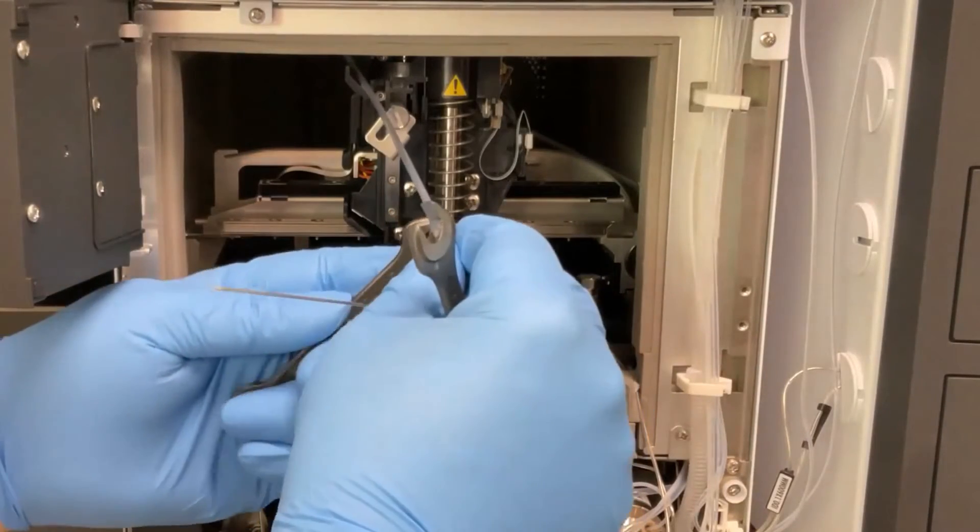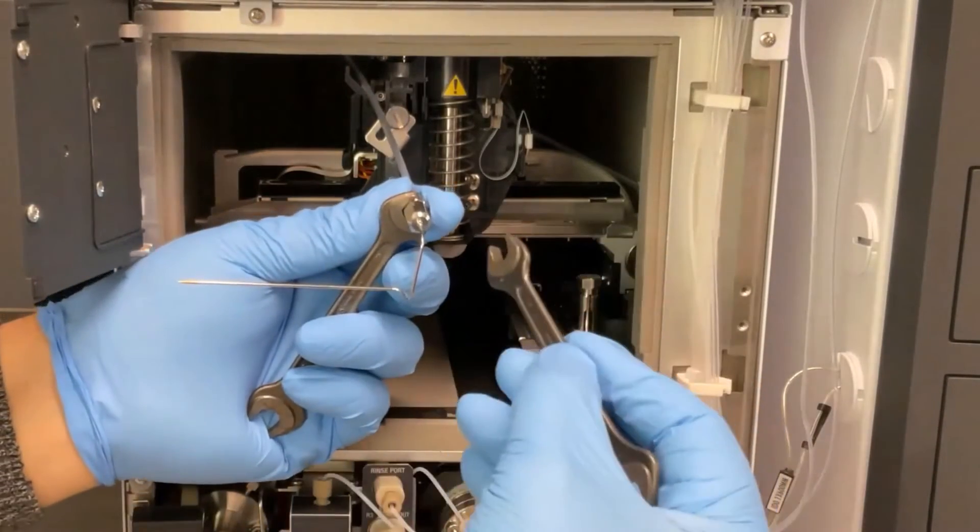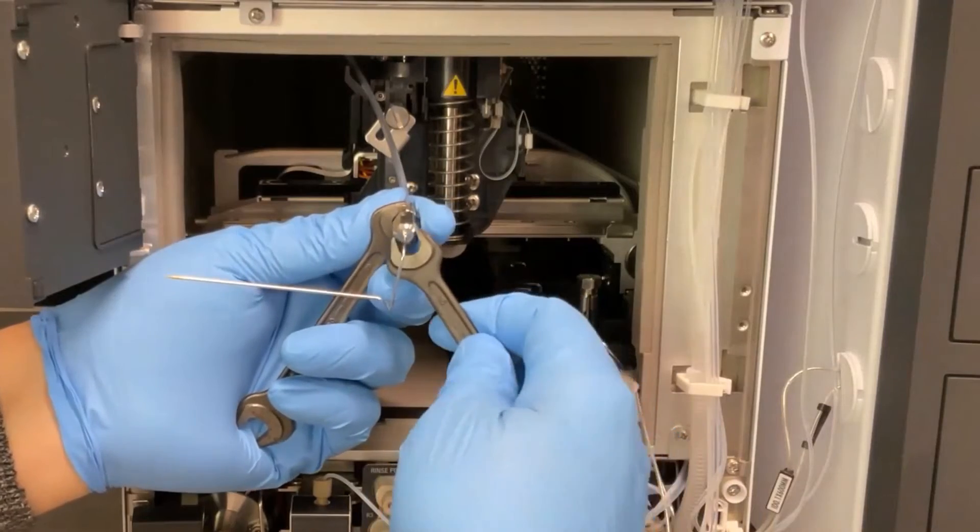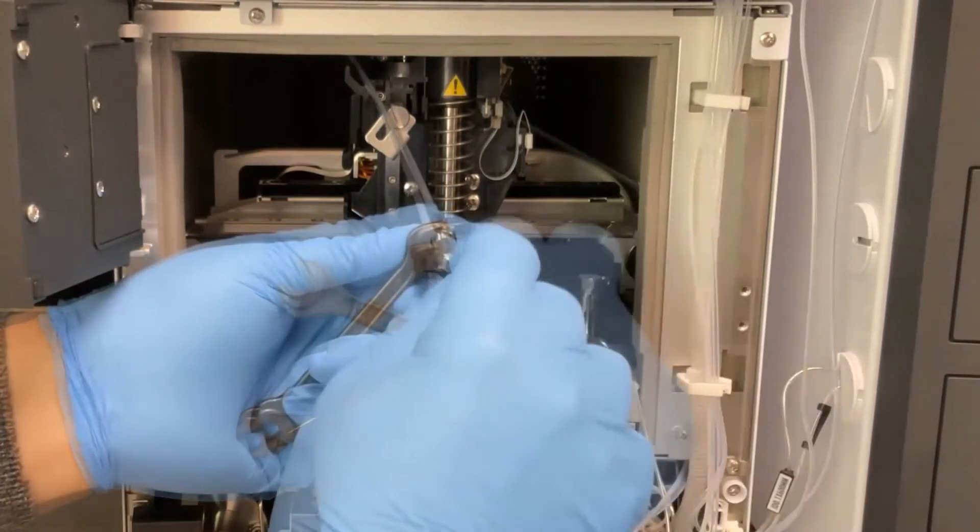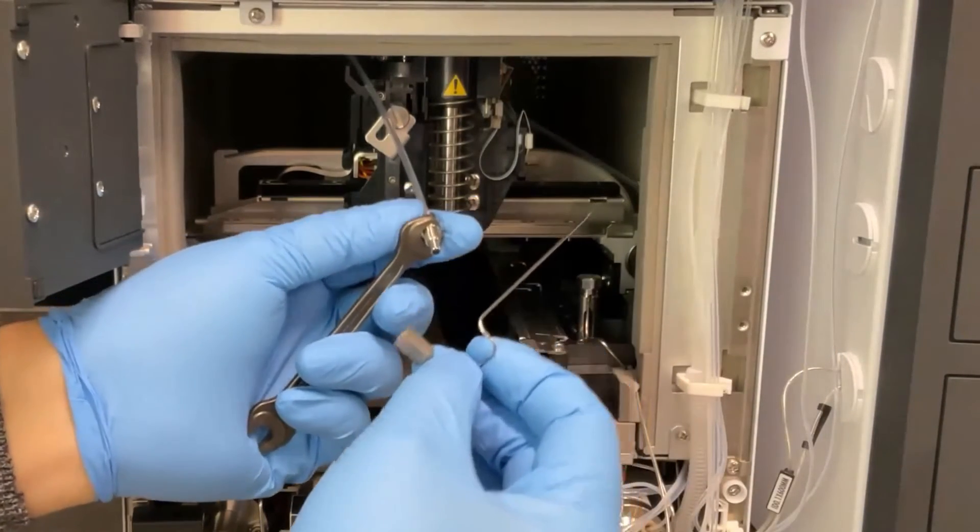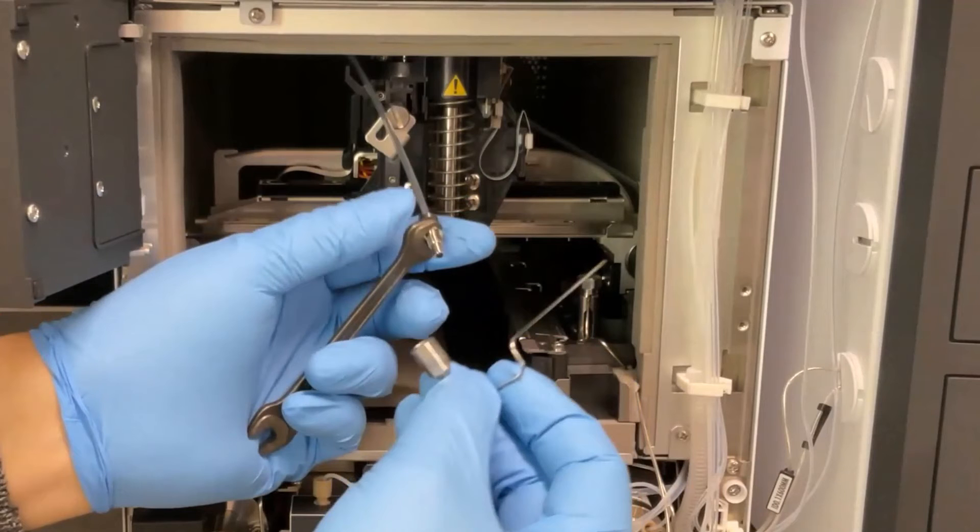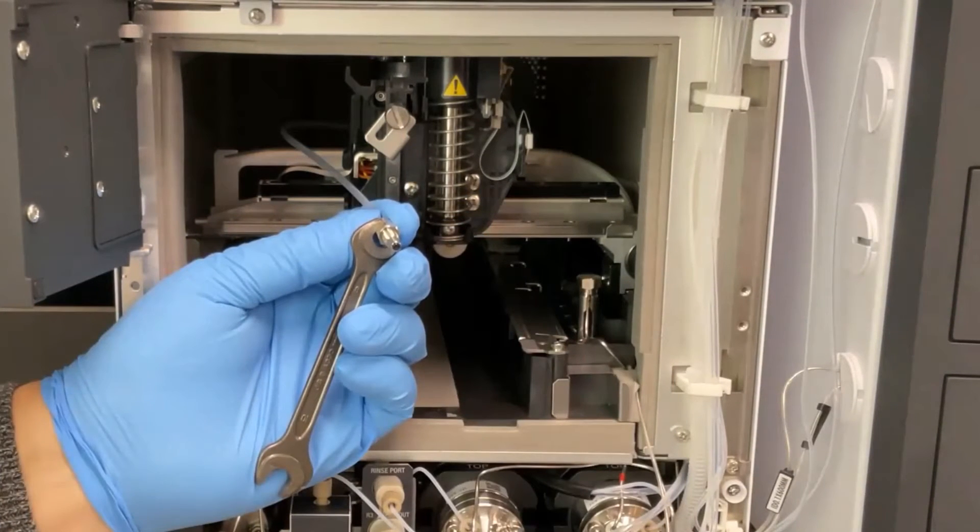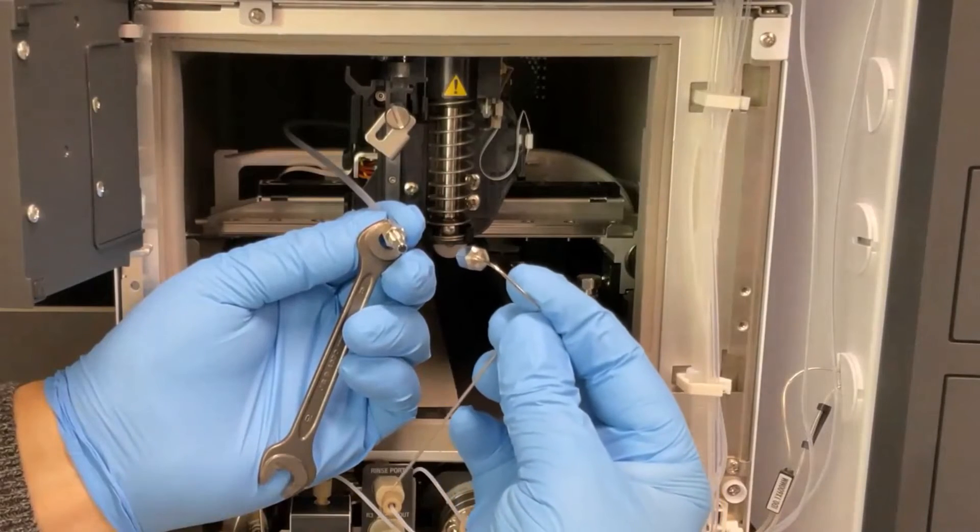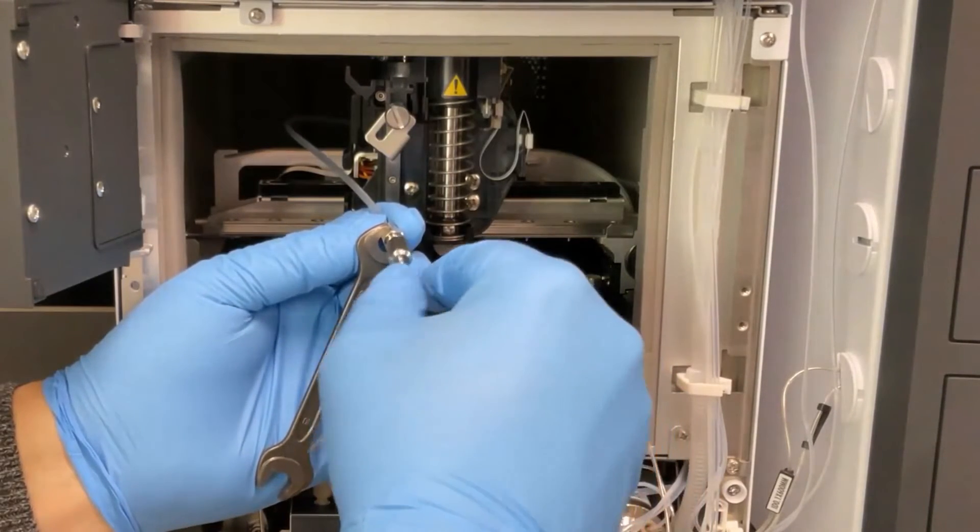Using two wrenches, remove the needle from the sample loop. Attach the new needle and tighten it by hand as much as possible.